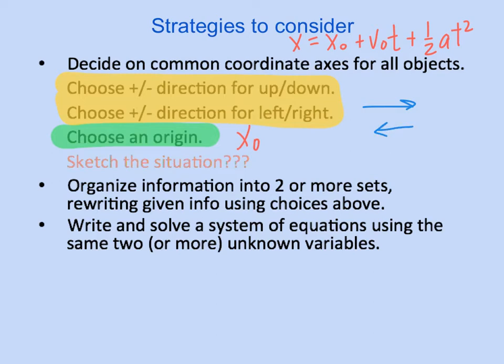And if you have an object that is moving to the right and a second object that is moving to the left, you can't put their v sub o values or maybe even their acceleration values in using the same positive or negative signs. If one object starts going to the right and the other one starts going to the left, then their v sub o's have to have the opposite sign. Same thing is true with their accelerations. So pay attention to that as you are setting up the equations.